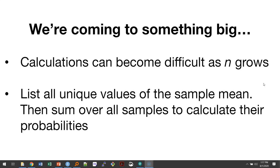The number of calculations becomes way more complex as n grows from three to four to five, etc. And so what we could do is we could list all of those values for the sample mean and then continue to sum over each sample and calculate the probabilities. But what we're really coming to in statistics is something really big.